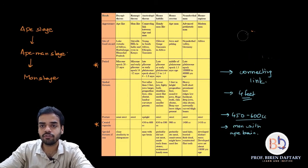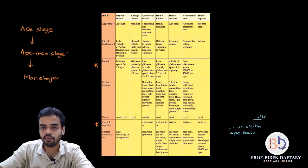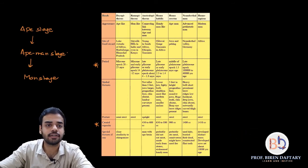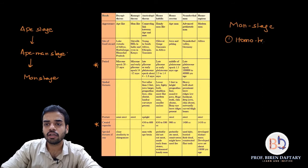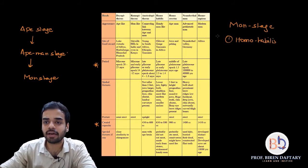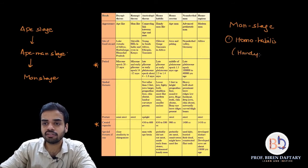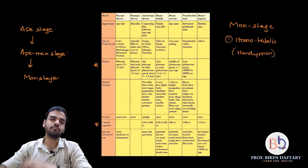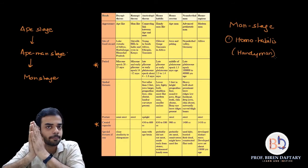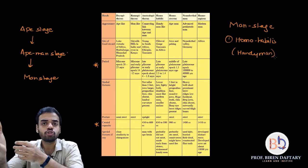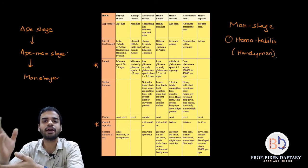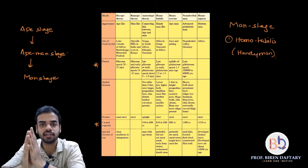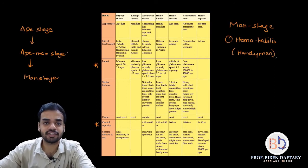The first man-stage is Homo habilis, commonly called the 'handyman.' These were the first humans to make tools out of stones or wood — so this is the first stage in evolution where tool-making occurred, hence the nickname handyman.